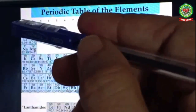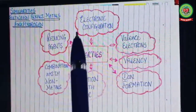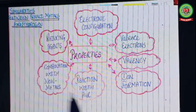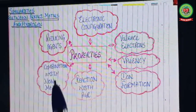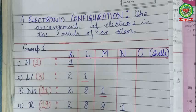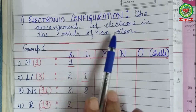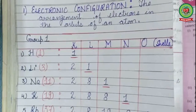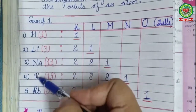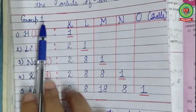Let's discuss the similarities between alkali metals and hydrogen. The properties we will compare are: electronic configuration, valence electrons, valency, ion formation, reaction with air, combination with non-metals, and reducing agents. Starting with electronic configuration — the arrangement of electrons in the orbits of an atom. In Group 1, we have hydrogen, lithium, sodium, potassium, and rubidium with atomic numbers 1, 3, 11, 19, and 37 respectively.